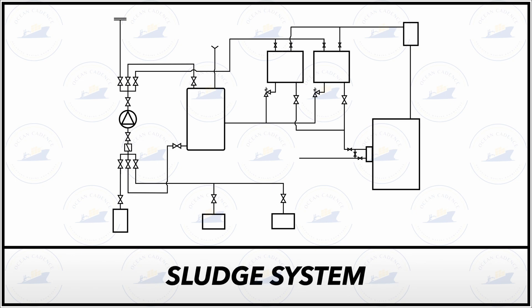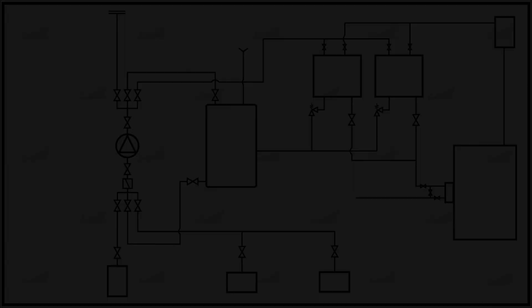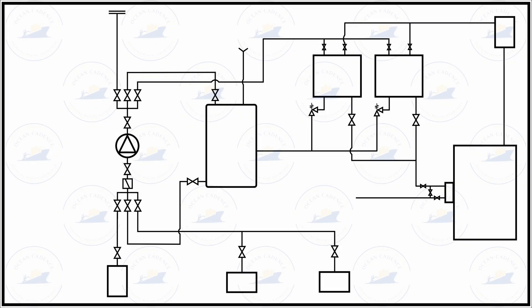Once we shift our focus on to the sludge system, we know that there are different elements through which sludge is generated on board. The fuel used in the main engine, auxiliary engine, and boiler has to be purified through the separator, and this is where the core chunk of sludge generation comes from. The scavenge and under-piston spaces, other areas within the main engine, leaks, and swept oil from the lube oil section also contribute to waste oil generation as part of sludge. Other manual draining of different elements on board also contributes to sludge generation.